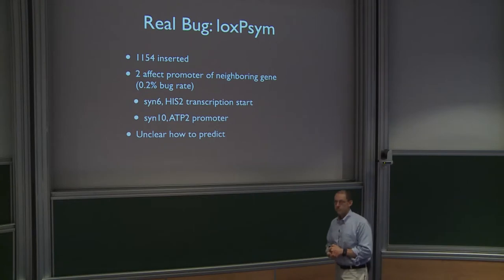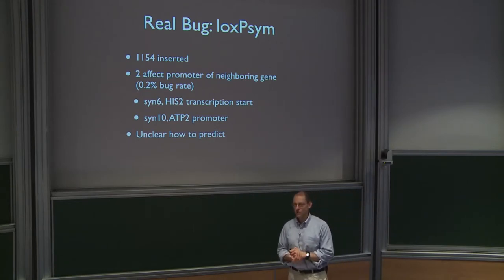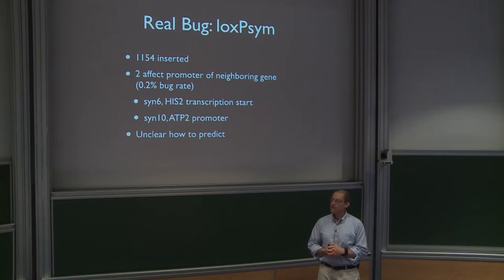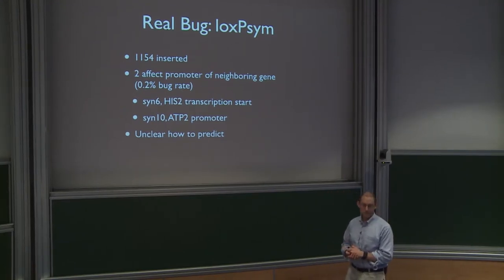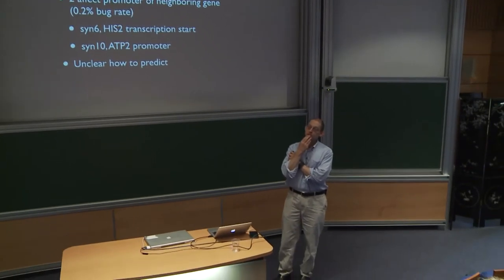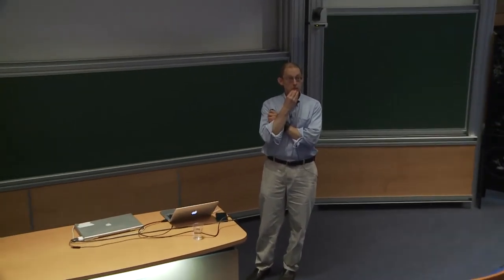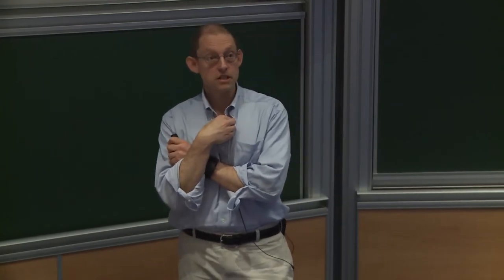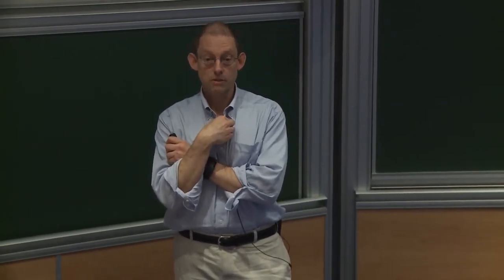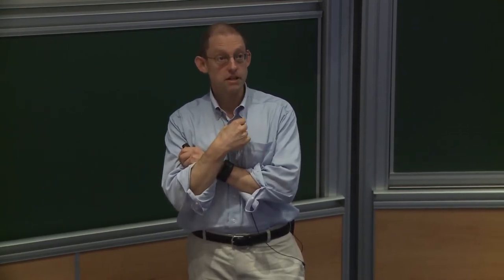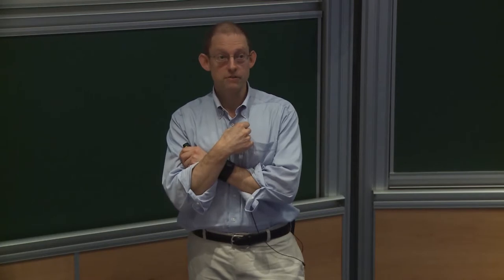It's unclear how to predict these. Unfortunately, knowing this wouldn't really have changed how we did the design. We've tried and tried but haven't found any good way to predict why out of 1,000 LoxP-Sym sites, two of them have this effect. The effect is a fitness defect due to downregulation of the neighboring gene — we pick it up seeing the cell has a fitness defect, seeing the transcript expressed below the level it should be, and we cure it by removing the LoxP-Sym site.